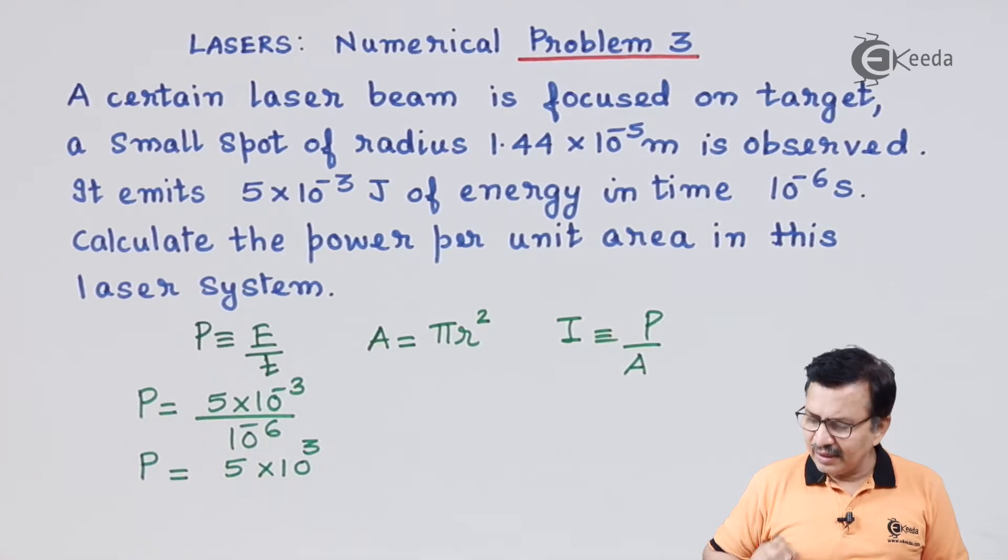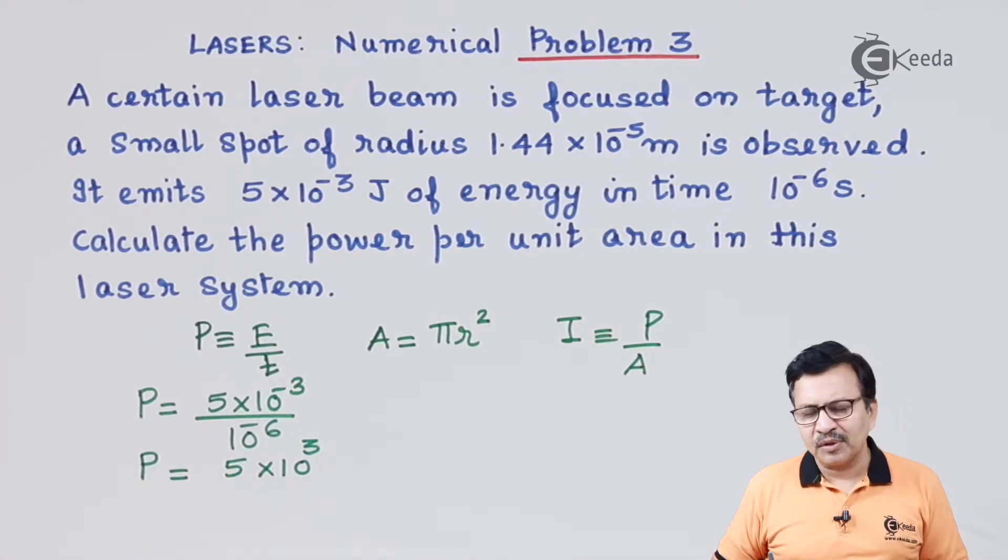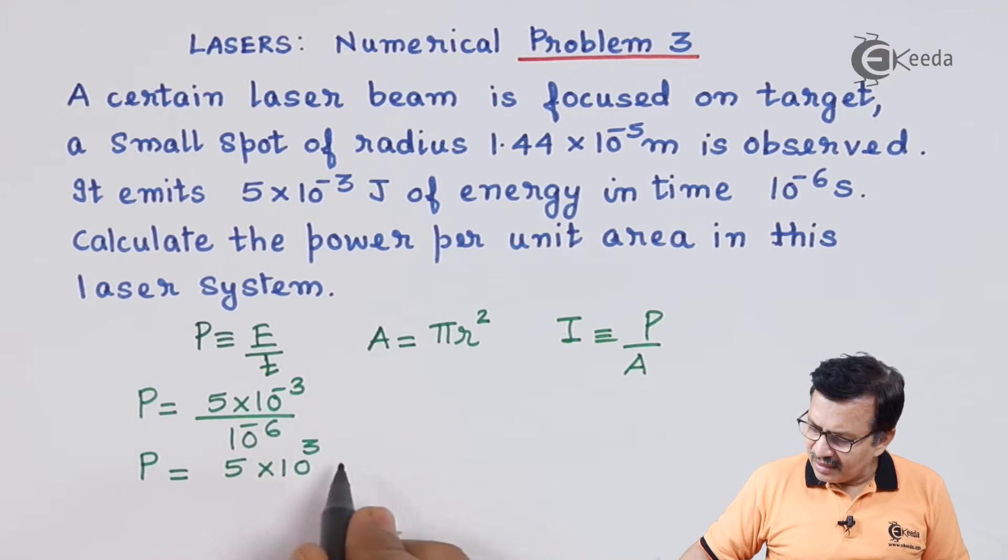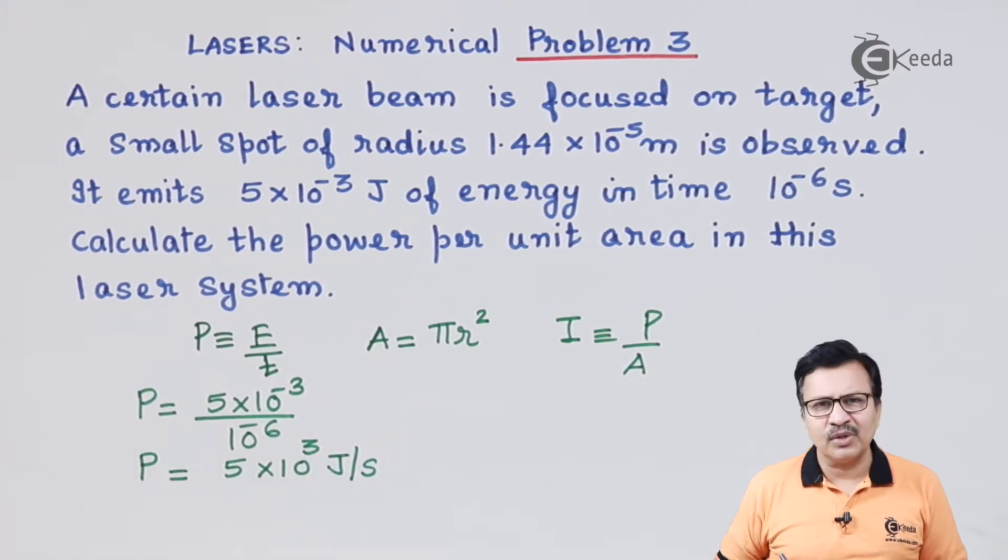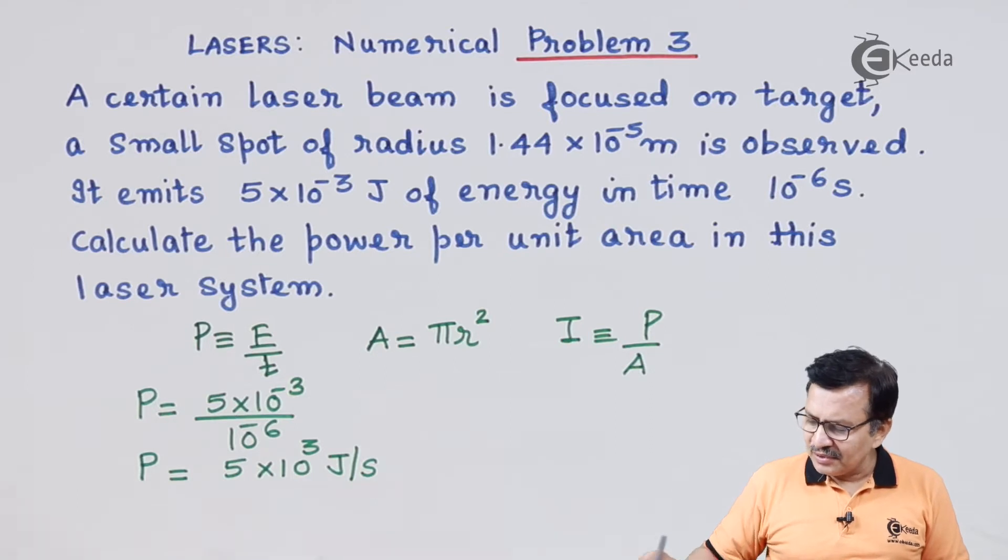So the power actually turns out to be 5 × 10³. Energy is in Joules, so it will be Joules per second, which is Watts. The second thing is to find out the area of the spot.